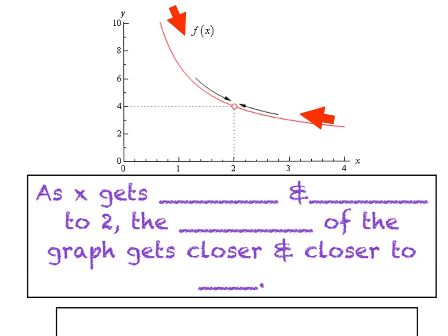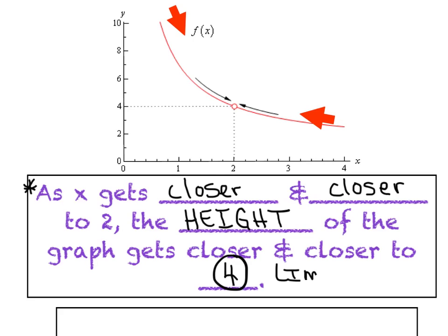So what is a limit? My first basic definition here is, as x gets closer and closer to 2, the height, and I can't stress that enough, we're going to use that word a lot today, the height of the graph gets closer and closer to, well in this case 4, and that's what we would call the limit. It's all about what the height's getting closer to, whether it actually reaches that height or not is not important.